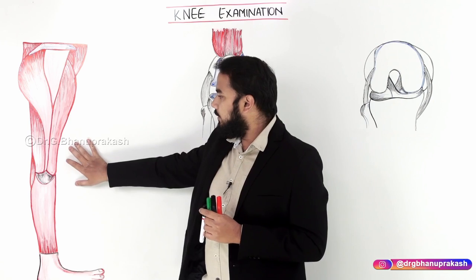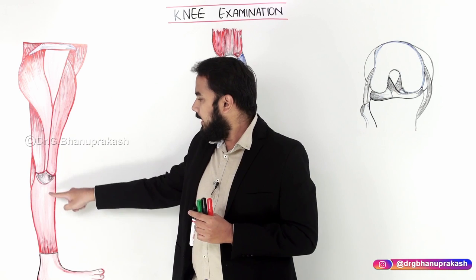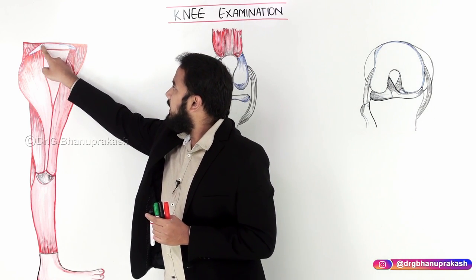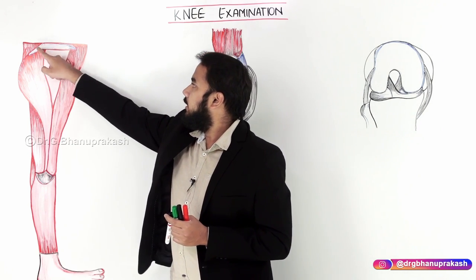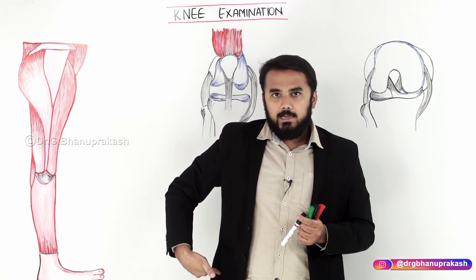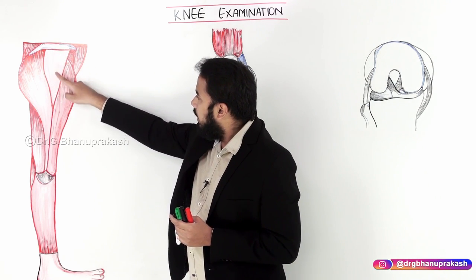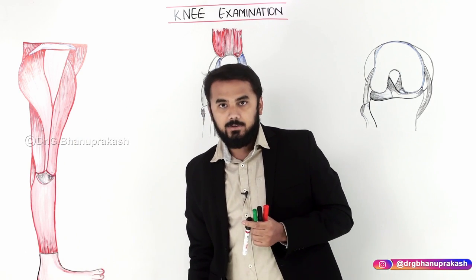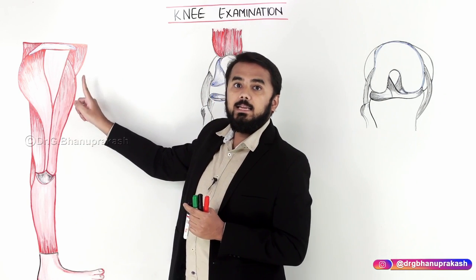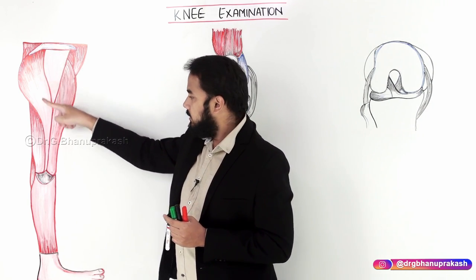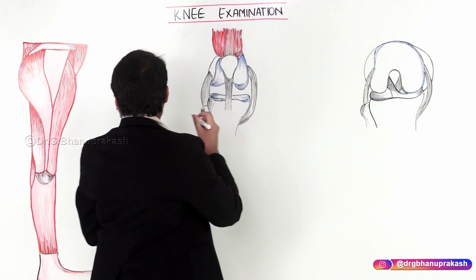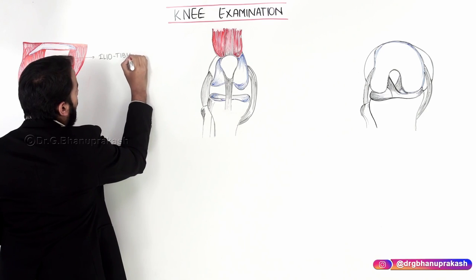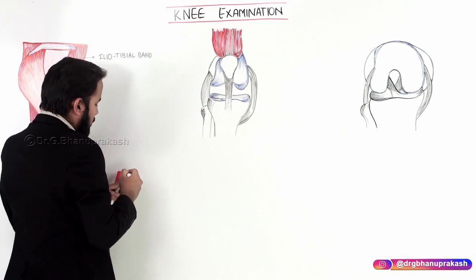From the lateral aspect, this is your thigh, this is your knee line, and this is your leg region. The white highlighted region is your iliac crest - your iliac bone. From the iliac crest, there is a fibrous sheath coming all the way down and attaching to the lateral surface of the tibia. Because it extends from the iliac crest to the tibia, this band is called the iliotibial band.